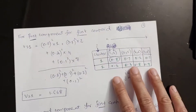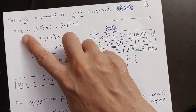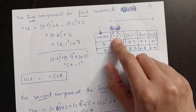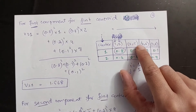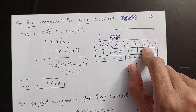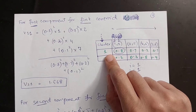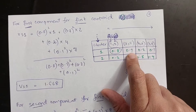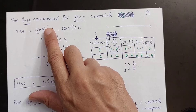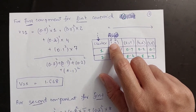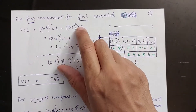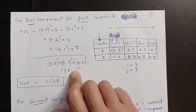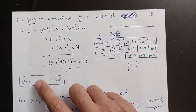In this example, we calculate the centroid value for the first component of the first centroid. There are two components in each data point, so first we consider the first components of all data points for the first cluster. We take the percentage values from the first cluster: 0.8, 0.7, 0.2, and 0.1, place a square over them, and multiply by the first components of the data points: 1, 2, 4, and 7. In the denominator, we again take these percentages with the square signs. This gives us the first component centroid value.